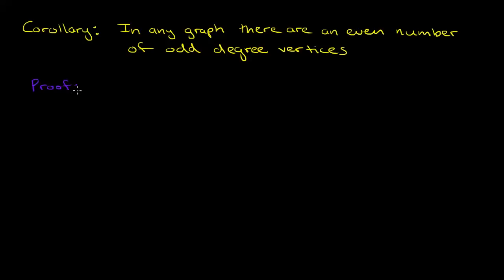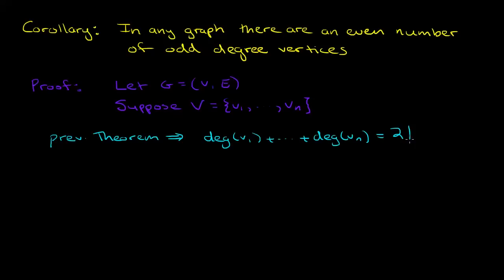Let's think about the proof. Let G equal V E be a graph. Suppose the vertex set is V1 through Vn, the set of those vertices. The previous theorem implies that the sum of the degrees of the vertices is equal to twice the number of edges.